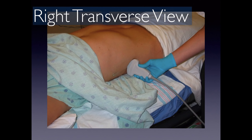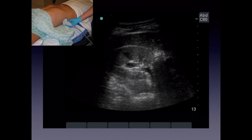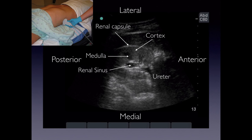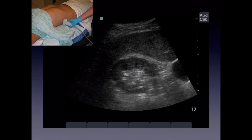For the right transverse view, we remain on the same side with the indicator towards the bed to get a transverse image of the kidney. In this orientation you can actually see the ureter coming out of the kidney and a medullary pyramid. The lateral-to-medial orientation hasn't changed — we've just flipped the transducer so the indicator is now posterior, with the opposite being anterior. You can also see the renal capsule and perinephric fat.